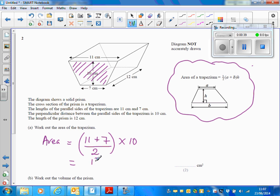So if we do 11 plus 7, that's 18. 18 divided by 2 times 10 - that's just the same as 9 multiplied by 10, which is 90 square centimetres.